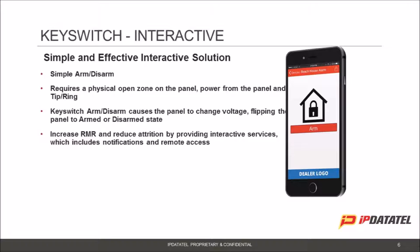If I'm a dealer, what challenges would the KeySwitch solution solve for me? This device allows you to provide a base model, simple interactive solution that lets customers arm and disarm and receive notifications. It's a great replacement for 2G radio. If you take an older system that communicates contact ID, you could put an IP DataTel KeySwitch device — such as the CAT CDMA or the CAT XT — on the system and give them a true upgrade.